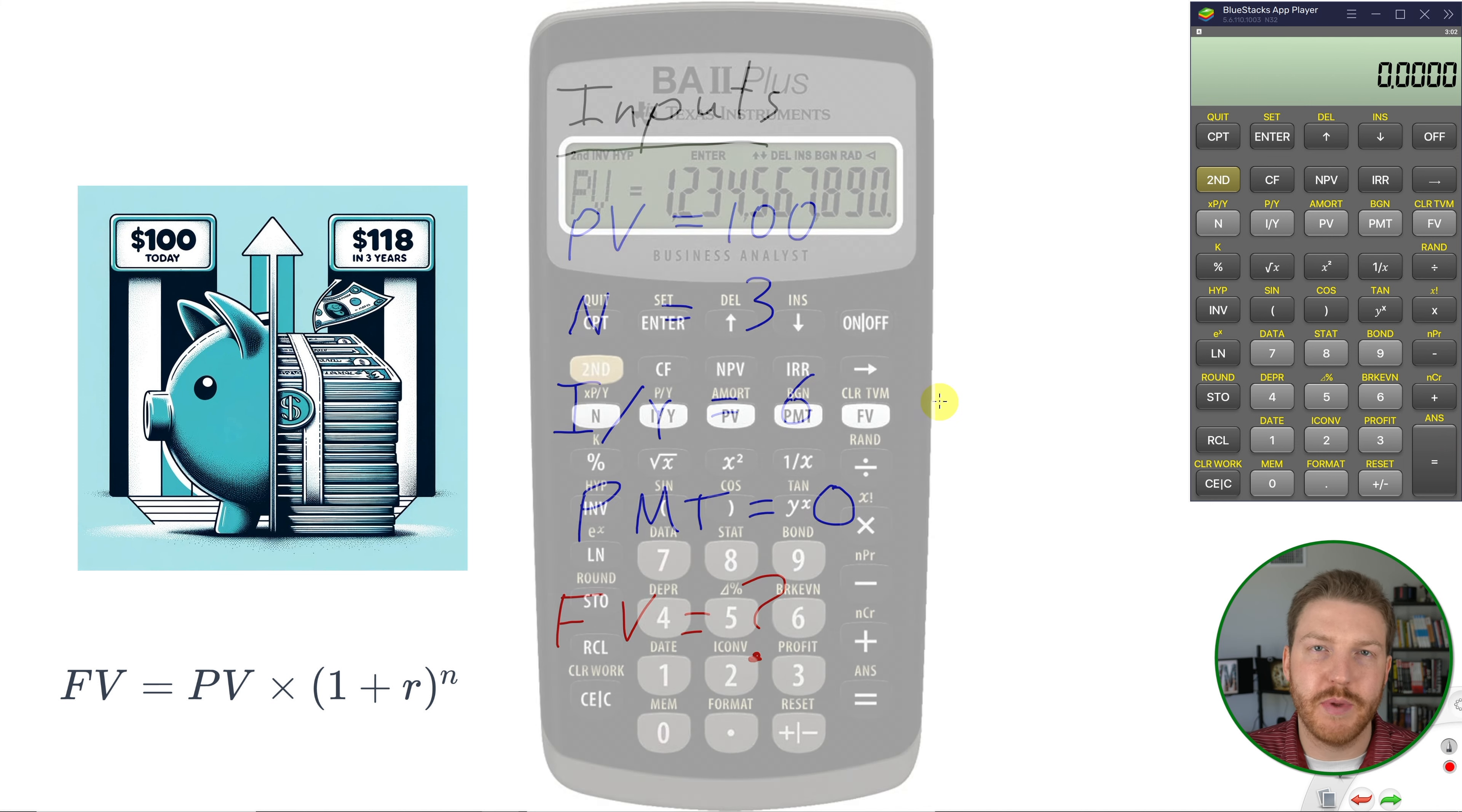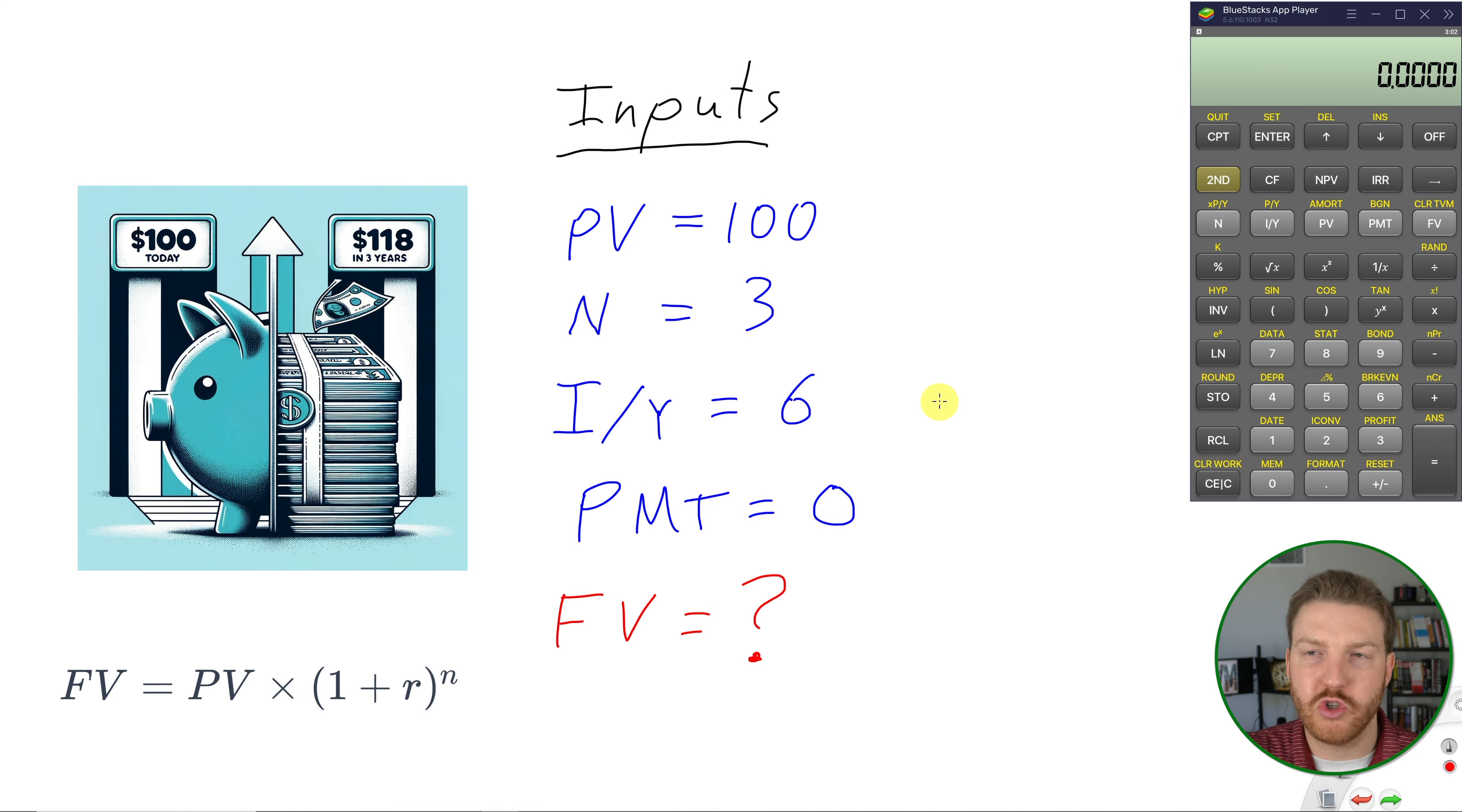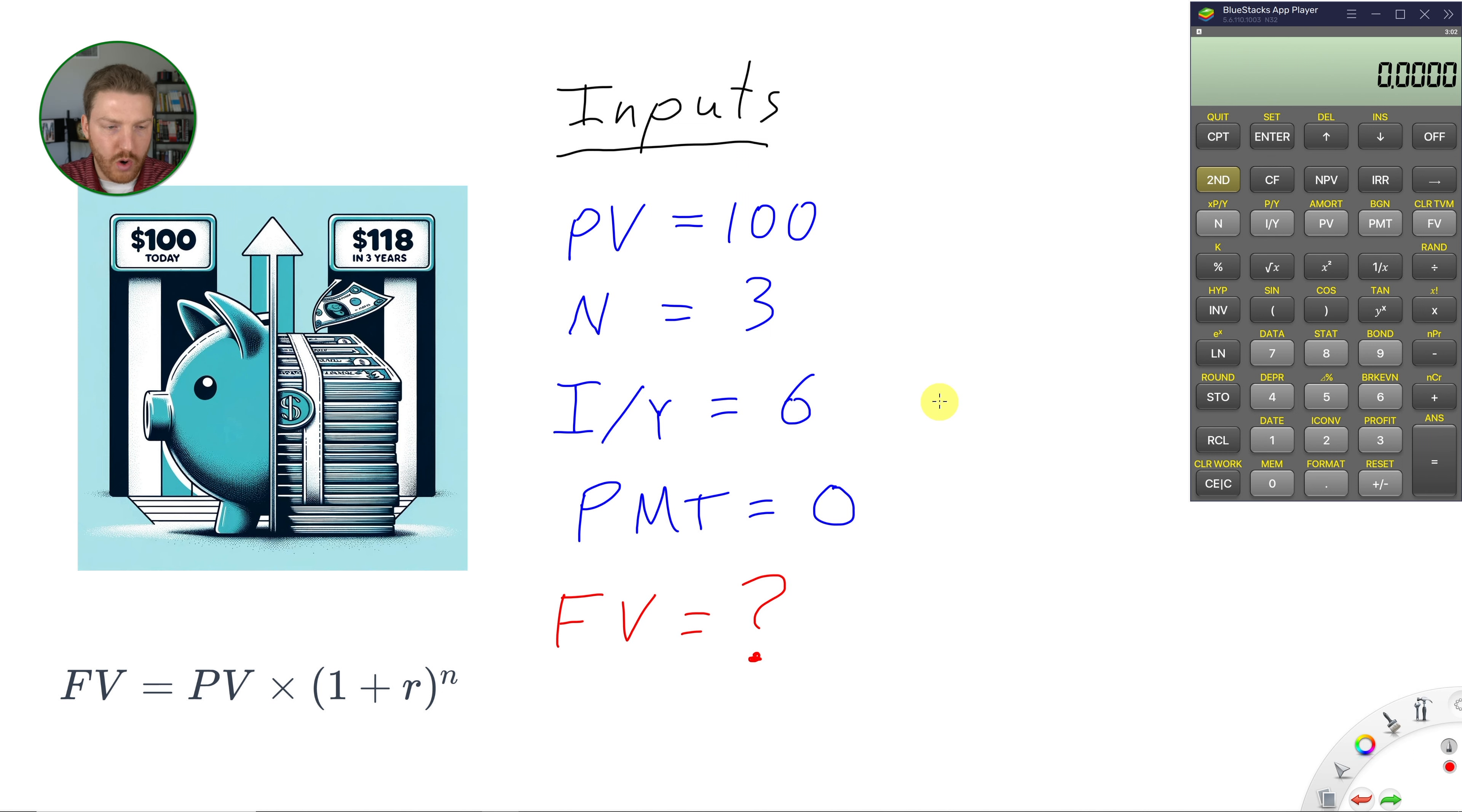And if you have a Texas Instruments BA 2 Plus calculator, the buttons on your calculator should look exactly the same as the buttons on the one on my screen right now. Now, what we could do is we could punch in all our values because we already know present value, the rate of return, and the number of years, and find future value that way. Or we can use these five buttons on our calculator right here. So let's do it with these five buttons.